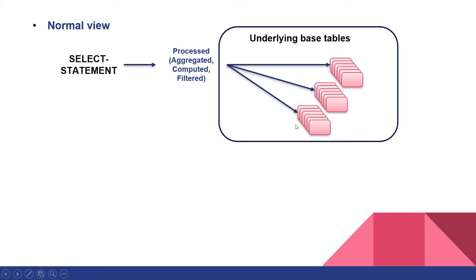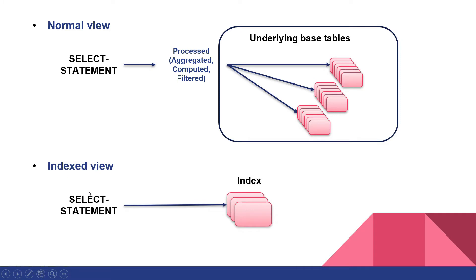Ideally, when you query data from a database, you want to have the least possible number of reads, especially if the view processes a lot of data for reporting. This is where indexed views come in. By creating a clustered index on a view, the data from the underlying tables are automatically processed and stored in the index. Instead of reading the data pages of the underlying tables, SQL Server then simply reads the data pages from the clustered index created on the view. As a result, the number of reads is heavily reduced, thus increasing the performance of select statements against the view.